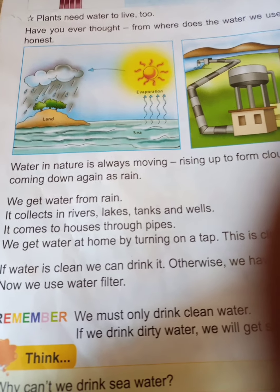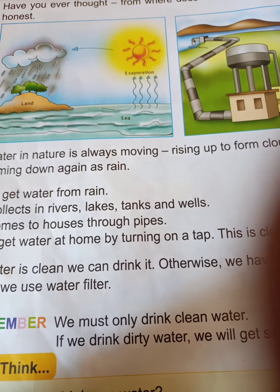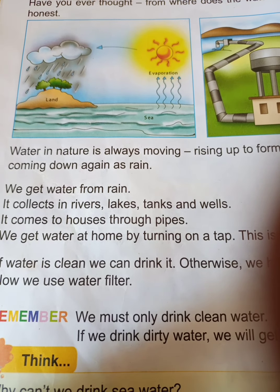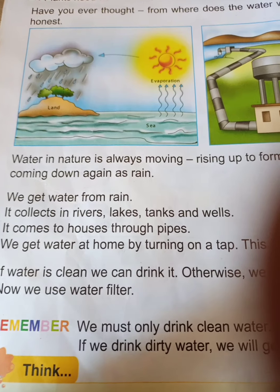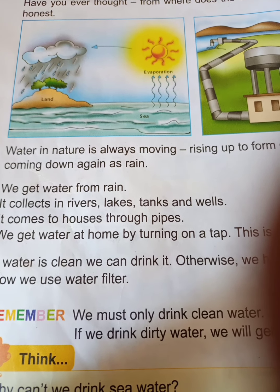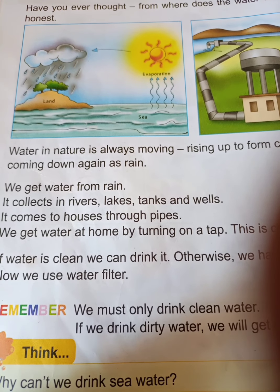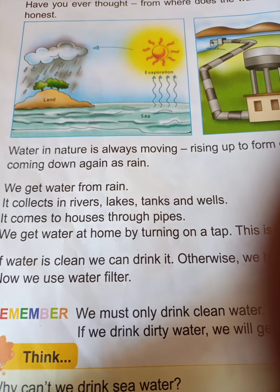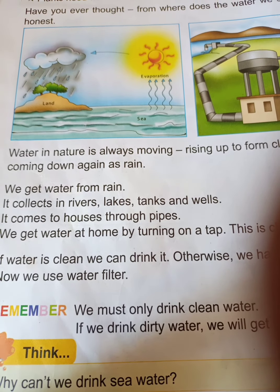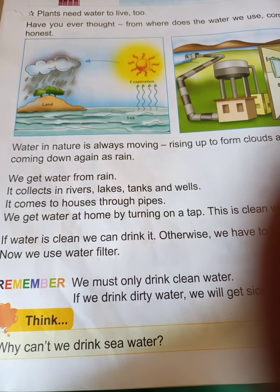Yesterday we discussed that water in nature is always moving — rising up to form clouds and then coming down again as rain. We get water from rain, which collects in rivers, lakes, tanks, and wells. It comes to our houses through pipes.